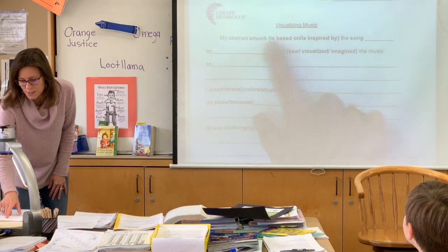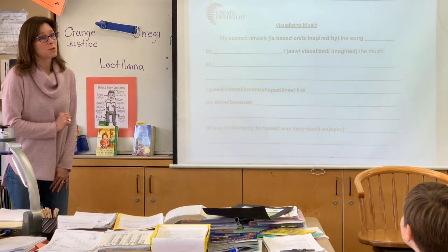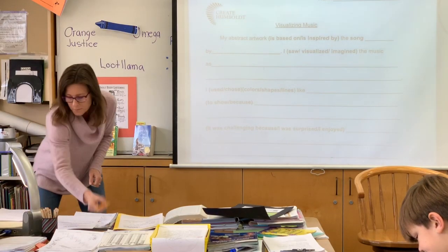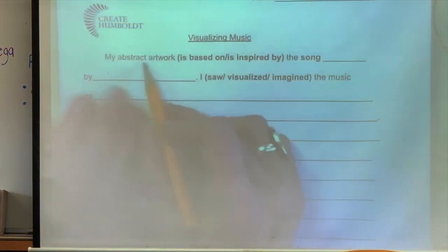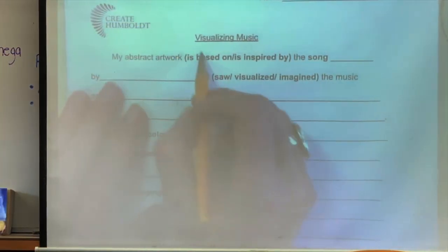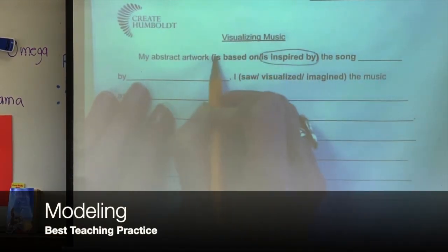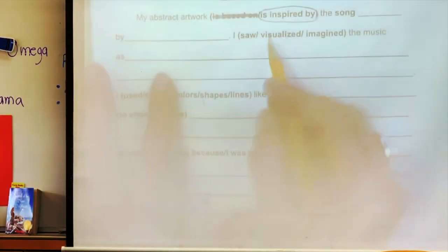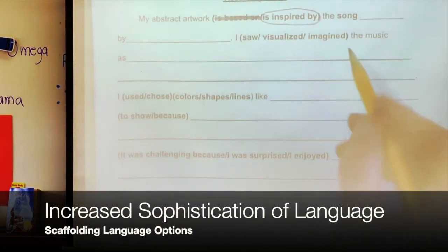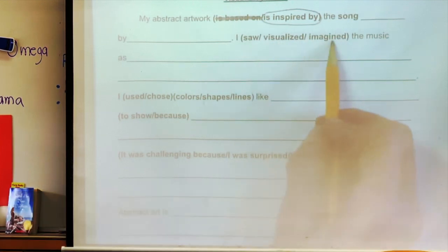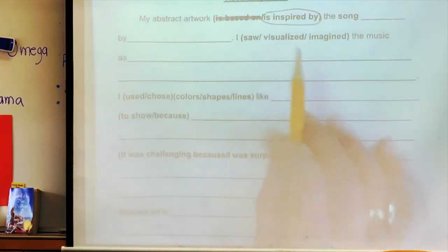Notice that when you see parentheses, you're going to make a choice. For example, cross off the one you're not going to use. The next frame gives you a choice: I saw, or I visualized, or I imagined the music as blank. On your listening exercise page, you wrote words describing your music — please point to those words now.